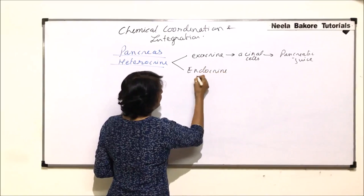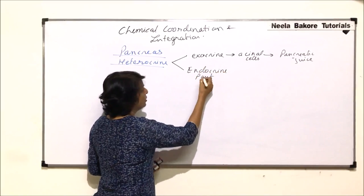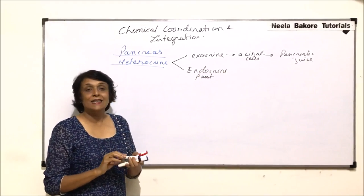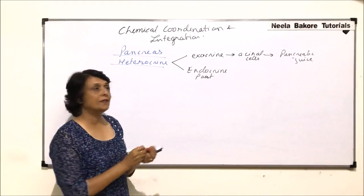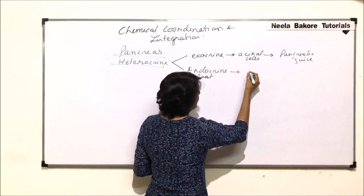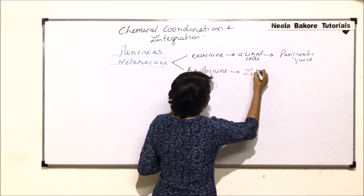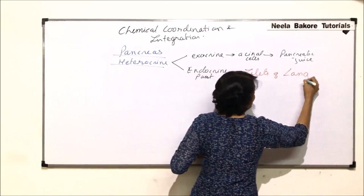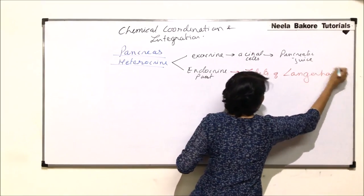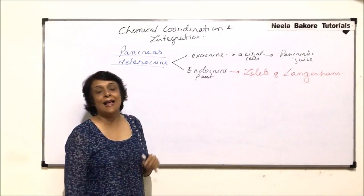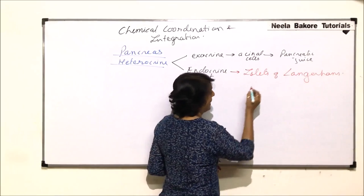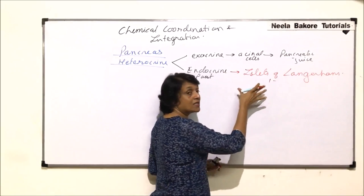The endocrine part which produces the hormones consists of a large number of epithelial cells which are called islets of Langerhans, named after the scientist Paul Langerhans. The number of these cells is about one to two million.